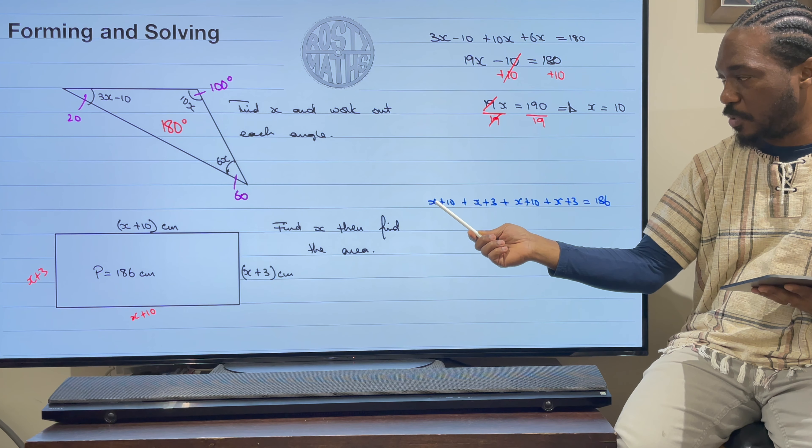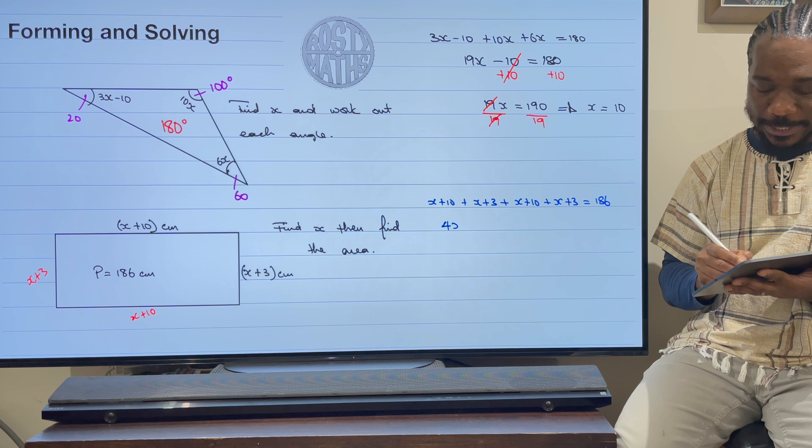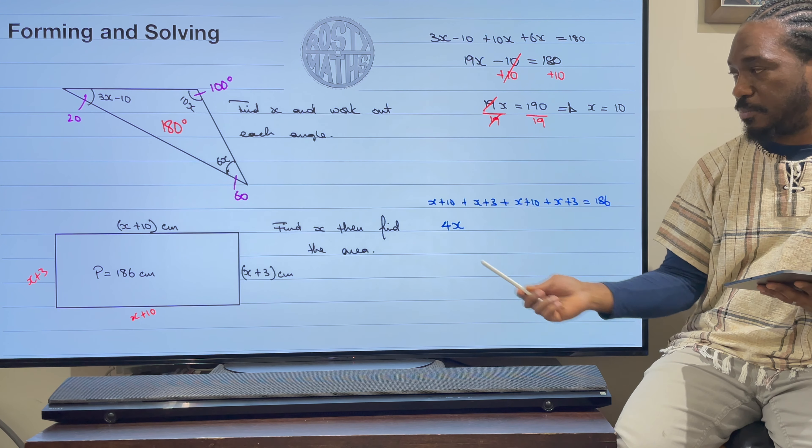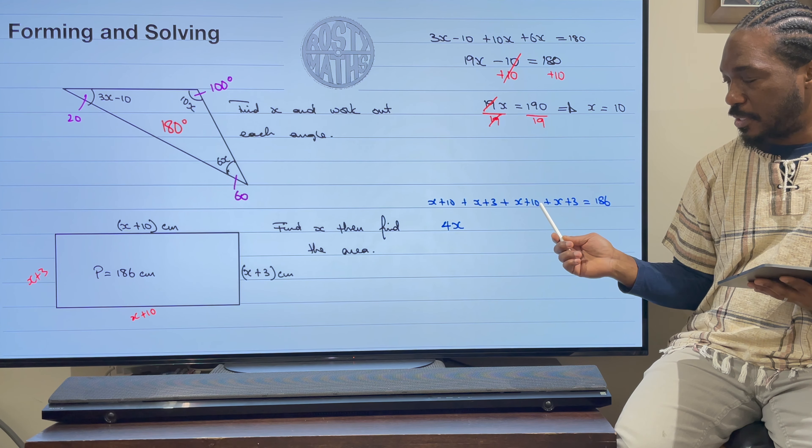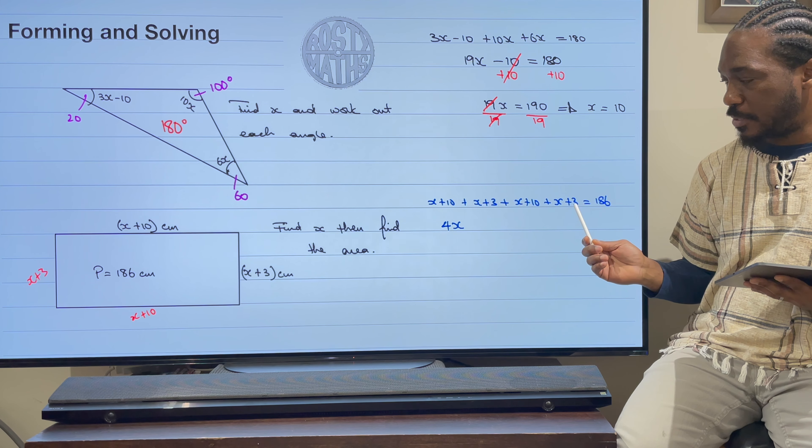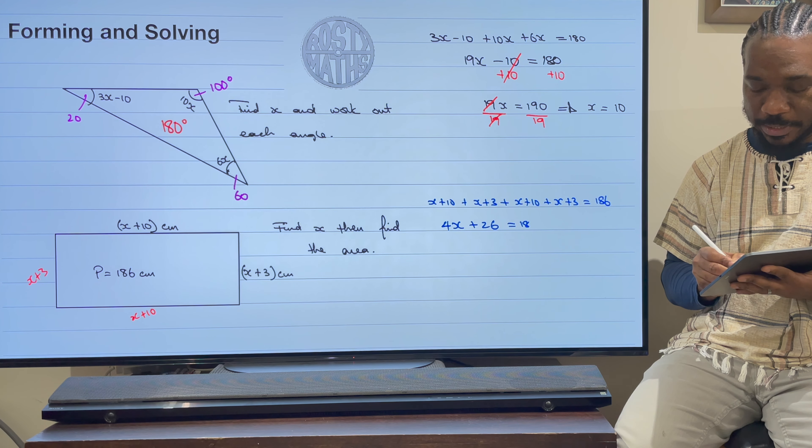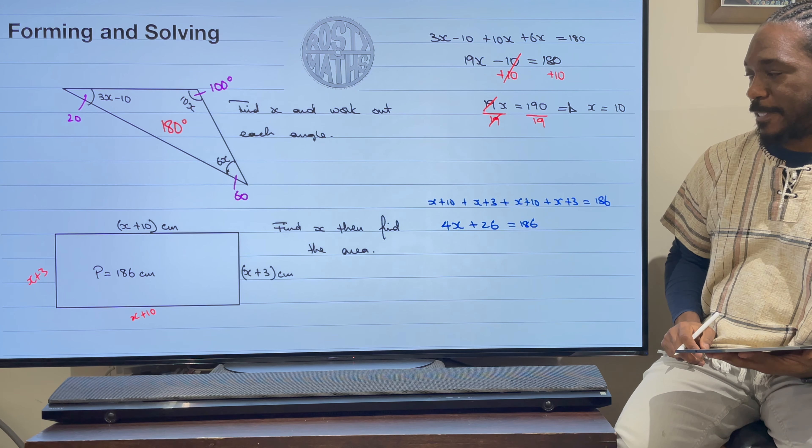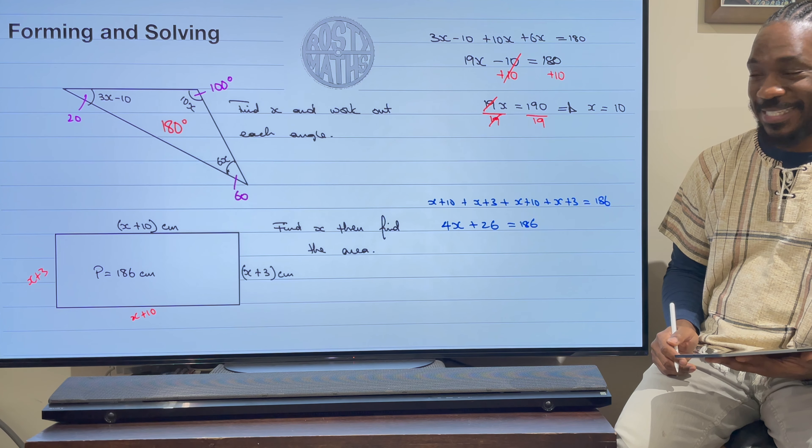So add all of those together. Now the next step: I need to combine everything. Let's combine my x's first. How many x's have we got? One, two, three, four x's. So I know that that's 4x. And then let's do the numbers now: 10 add 3 that's 13, add another 10 that's 23, and add another 3 that's 26. So that's going to add 26, and that equals to 186 there.